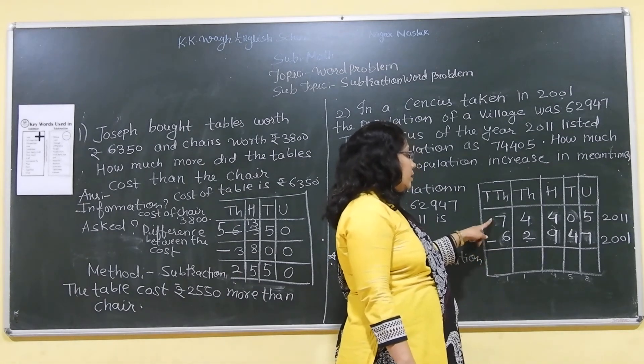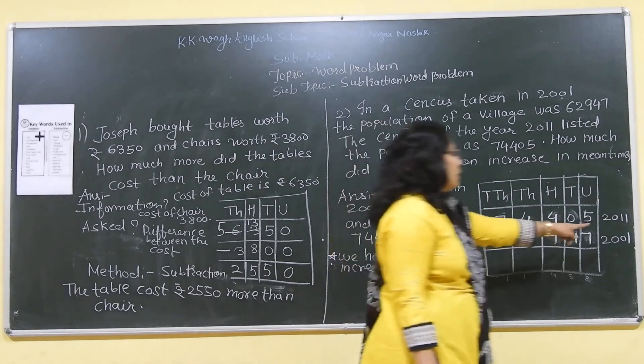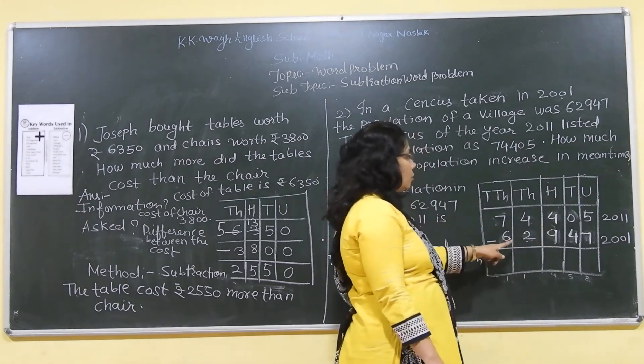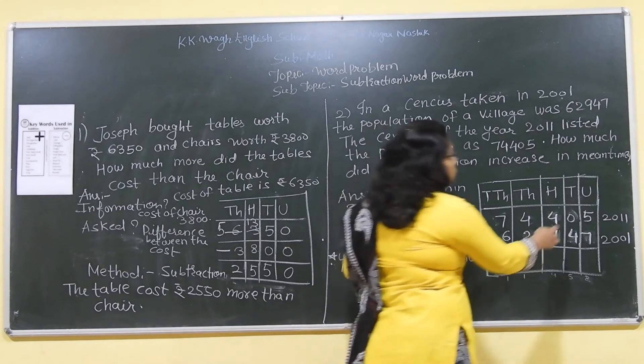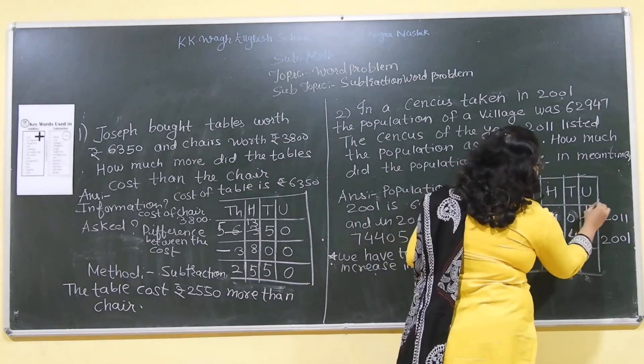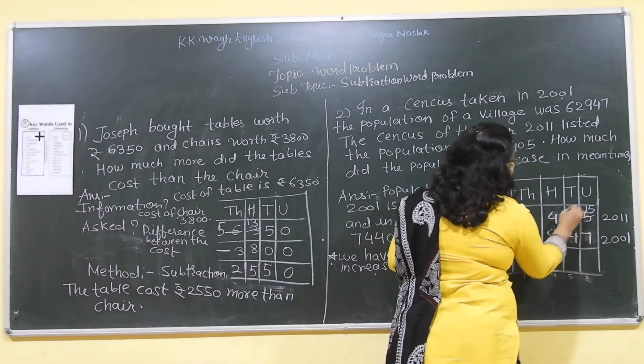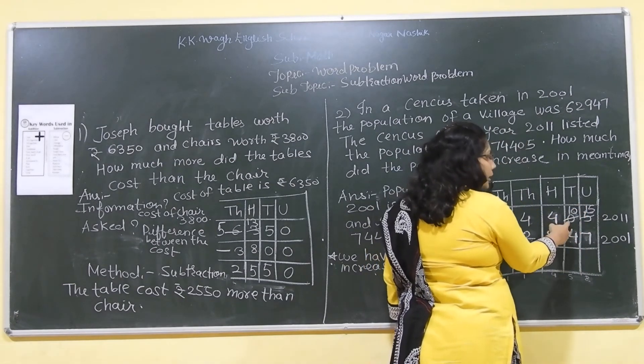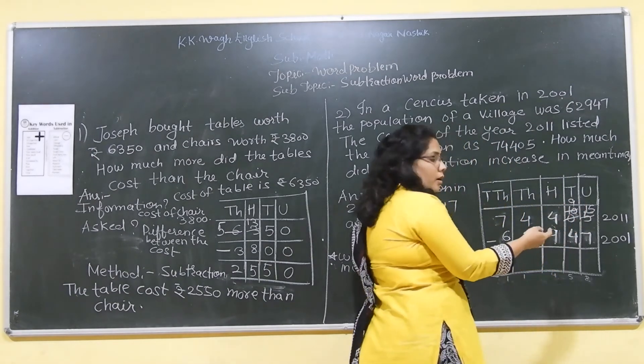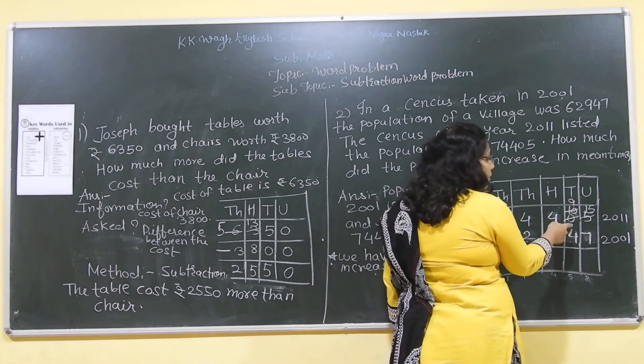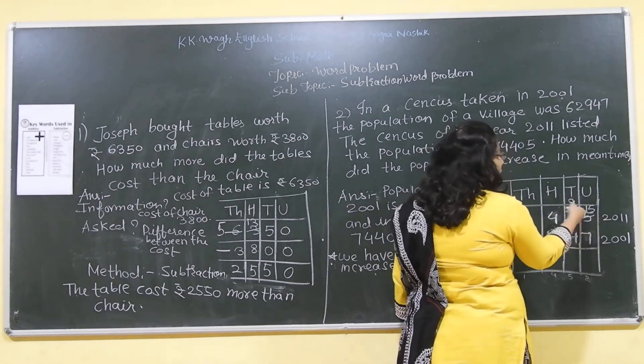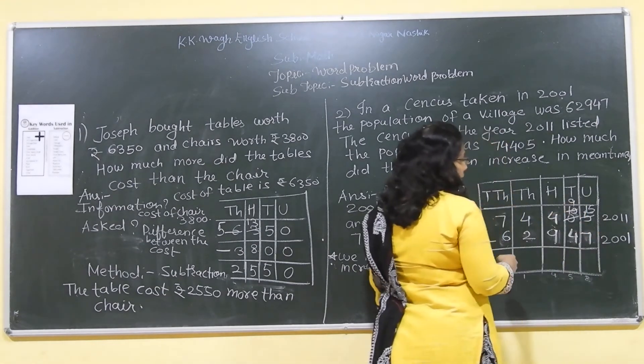The population in 2011 is 74405 and in 2001 is 62947. So, we can't subtract 7 from 5, we will make it 15 here, again we will make it 10 here. And, as we can't take 1 from 0, we are going to take 1 from 0. As we can't take 1 from 0, we have to make it 10, then we have to borrow 1 here, then we have to make it 9 here. Okay.